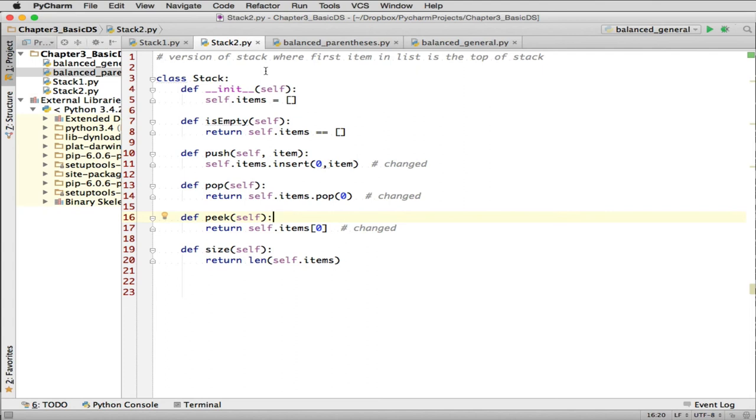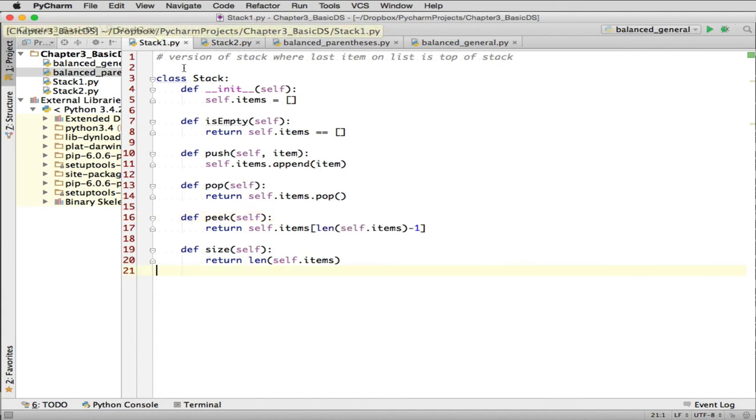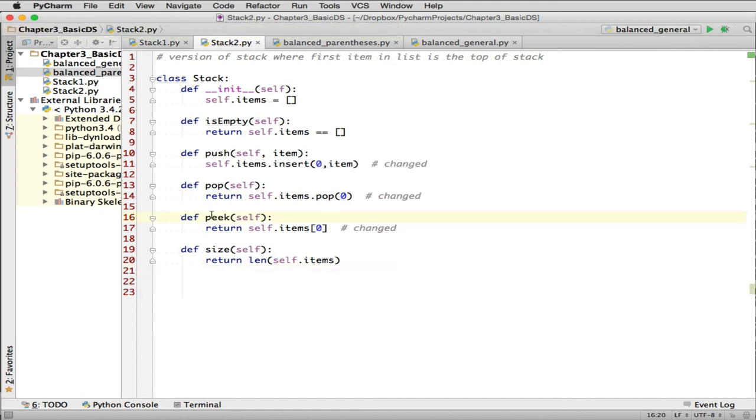Let's look at the other implementation. In this implementation, we store the first item in the list as the top of the stack instead of the end of the list. You'll see this in peak, it looks at the first item in the stack. When we look at the previous version, it looks at the last item. We actually only had to change push, pop, and peak. If you compare these, they're exactly the same except for those three. We changed half of the methods.